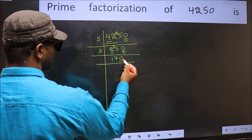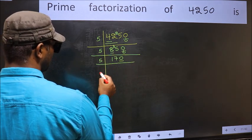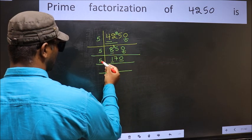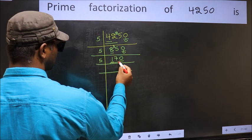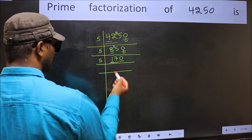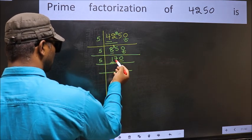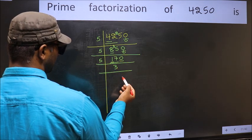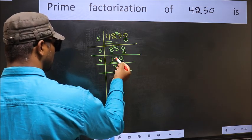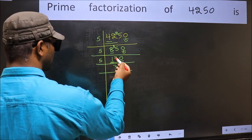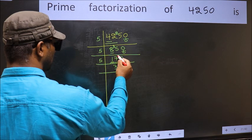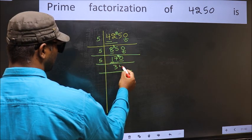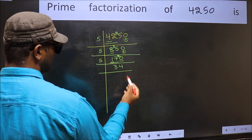Last digit is 0, so take 5. First number 1 is smaller than 5, so take two numbers: 17. A number close to 17 in the 5-times table is 5×3=15. 17 minus 15 is 2, carried forward: 20. When do we get 20 in the 5-times table? 5×4 is 20.